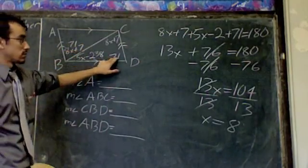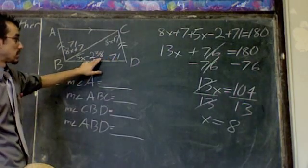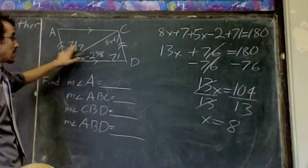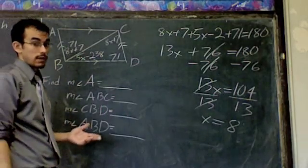And we should notice that these three angles add up to 180 like we said they would. 71 plus 38 is 109. 109 plus 71 is 180. That's exactly what we wanted. That's what we got.